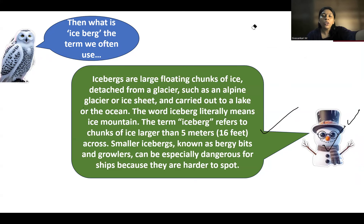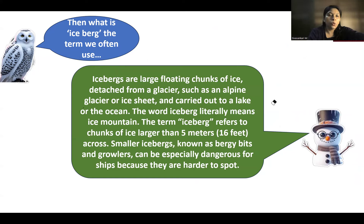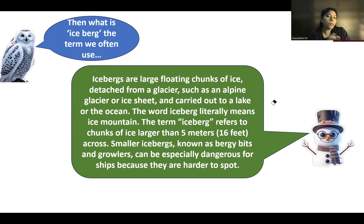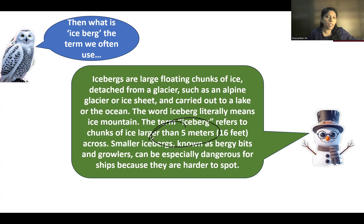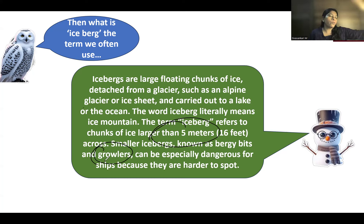Next is icebergs. Icebergs are small chunks of ice that break away and segregate from glaciers and float over ocean water or seas. It is a larger chunk of ice. If this floating ice is larger than five meters, we call it an iceberg. Below that size, we call it a growler. Icebergs and growlers are not safe for ships.